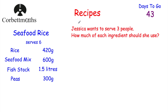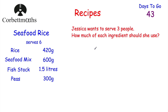So we've had a look at currency and exchange rates. Now let's have a look at recipes. In recipe questions we're often given a list of ingredients. Here we have seafood rice that serves six people. We've got four ingredients: 420g of rice, 600g of seafood mix, 1.5 litres of fish stock, and 300g of peas. Jessica doesn't want to serve six people — she wants to serve three. How much of each ingredient should she use? Feel free to press pause and try this yourself.